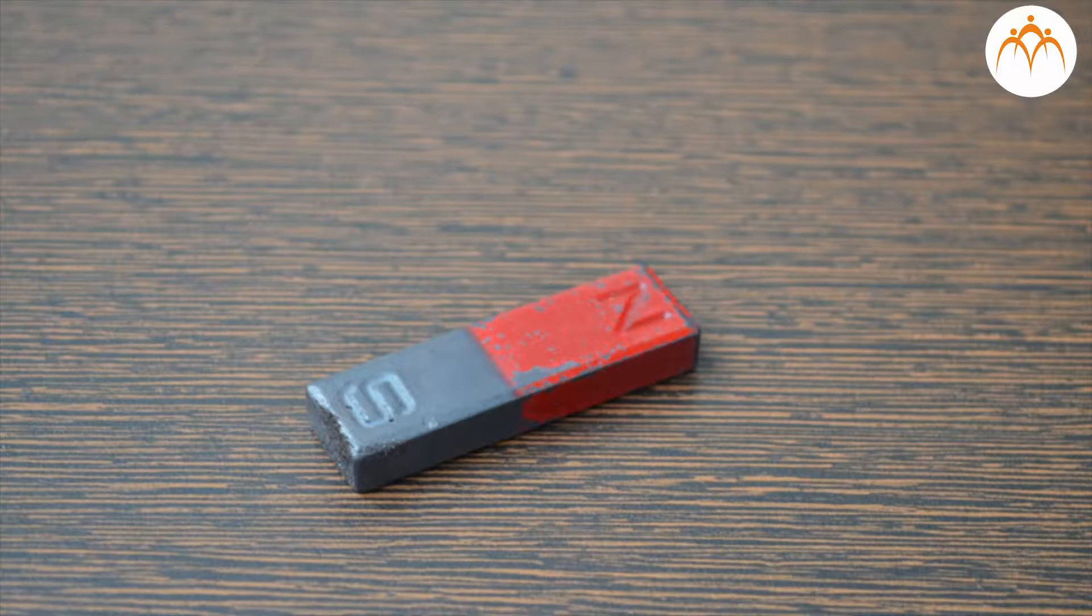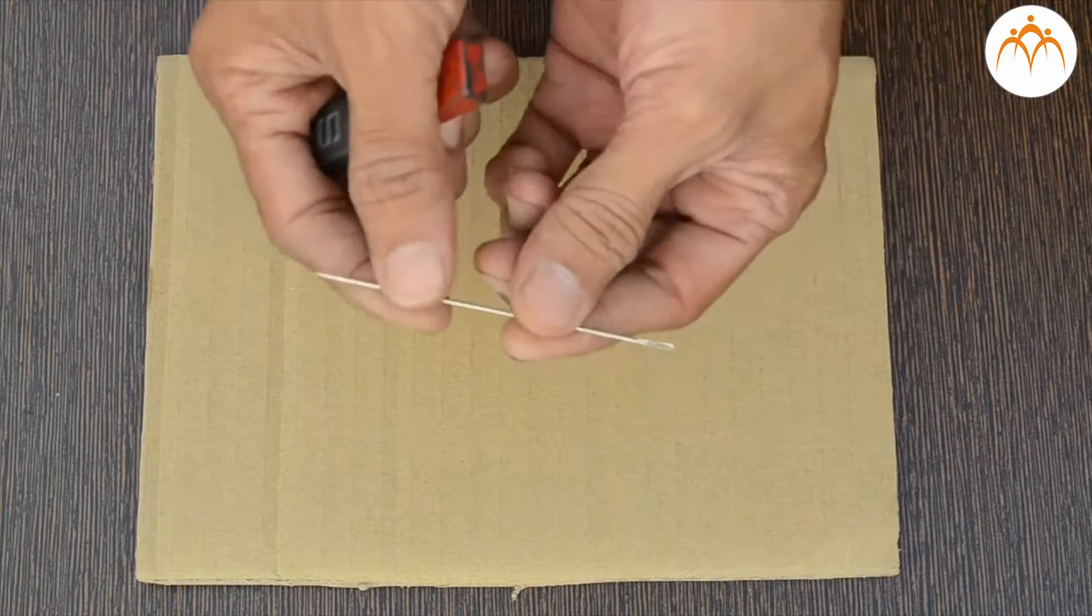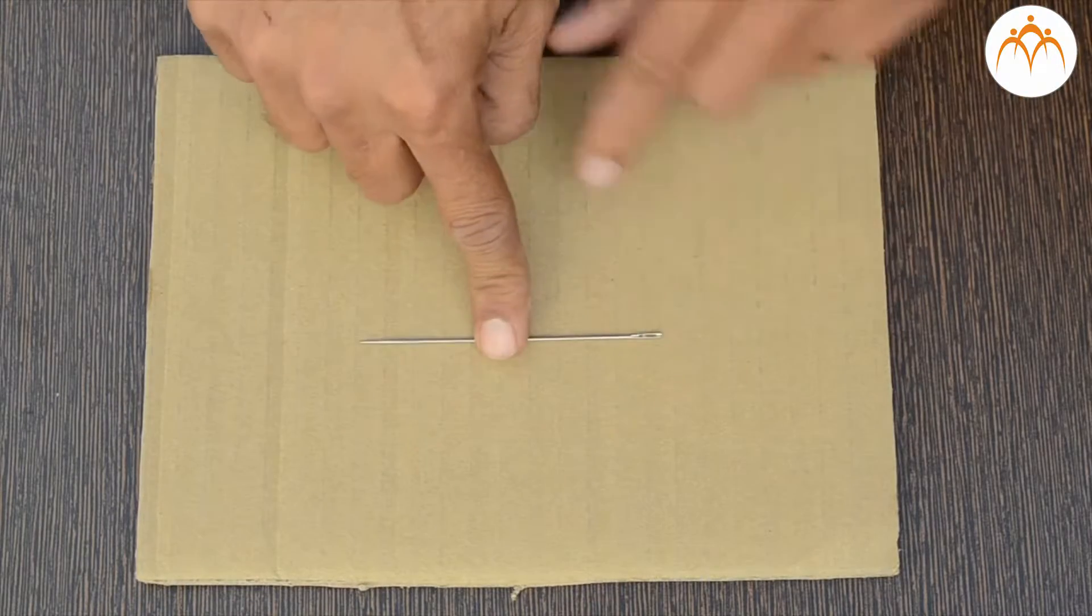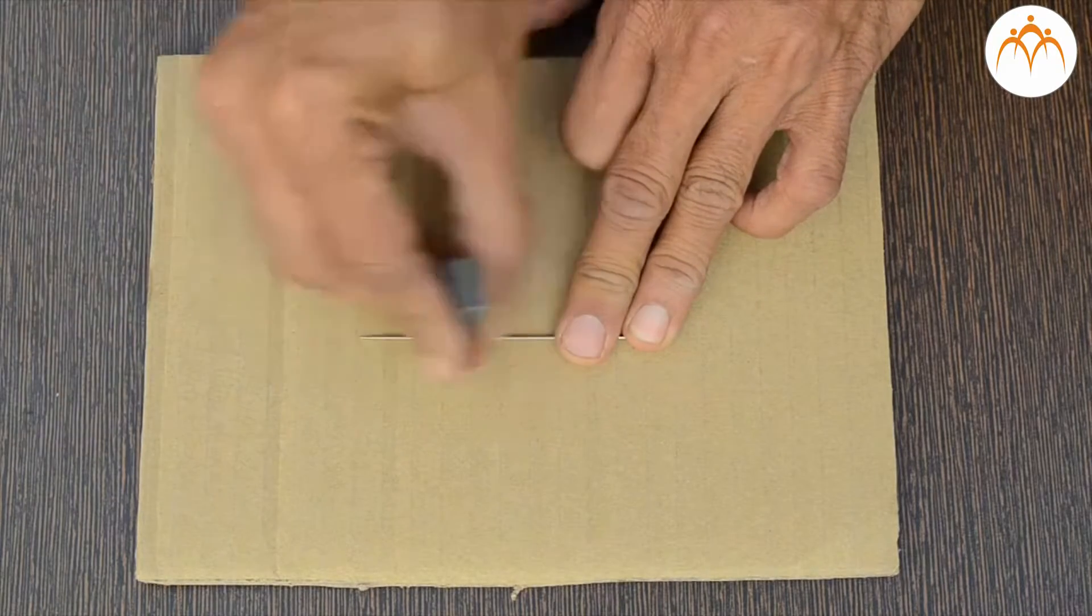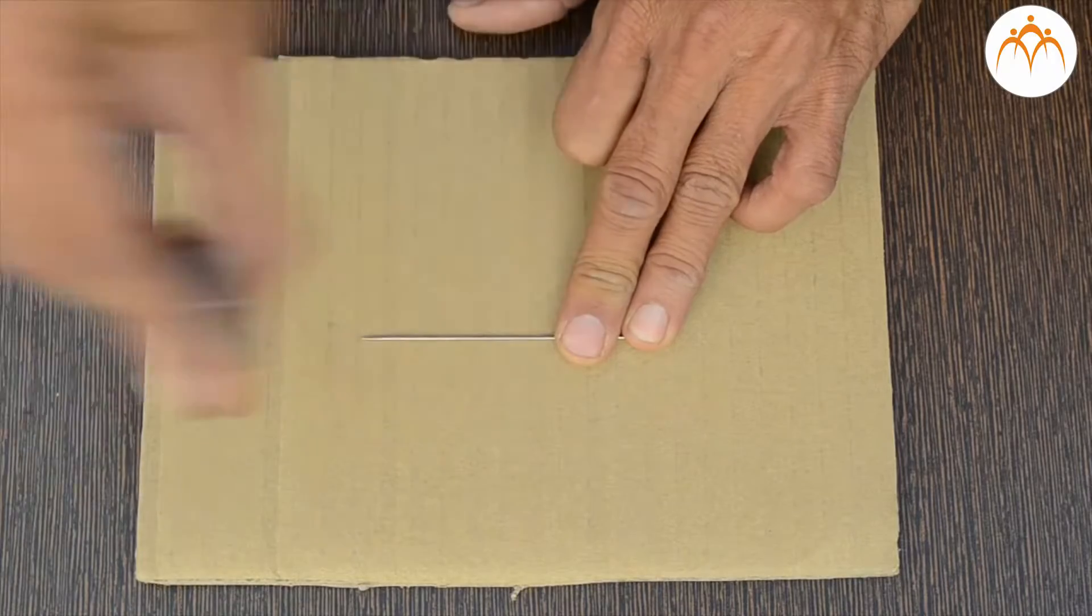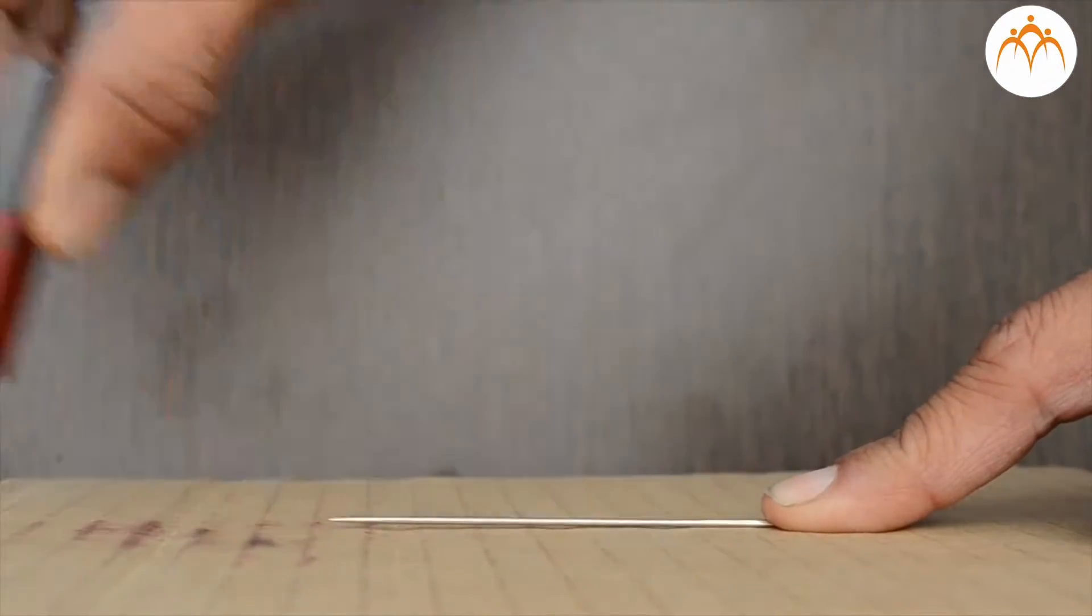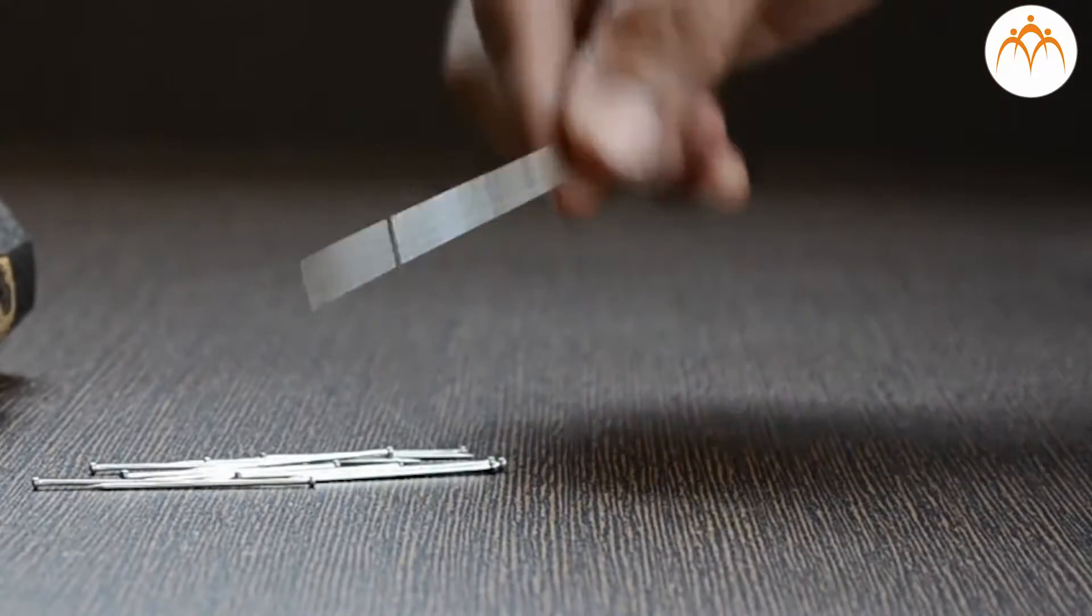This iron bar is made magnetic by rubbing it with another magnet. We also turn our sewing needle into a magnet. Rub it with one pole of the magnet. It is best to stroke it only in one direction and not back and forth. The needle is stroked approximately 100 times in a single direction.